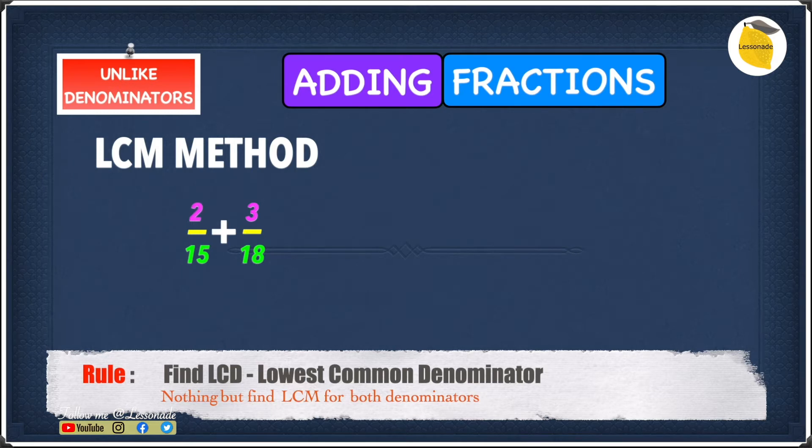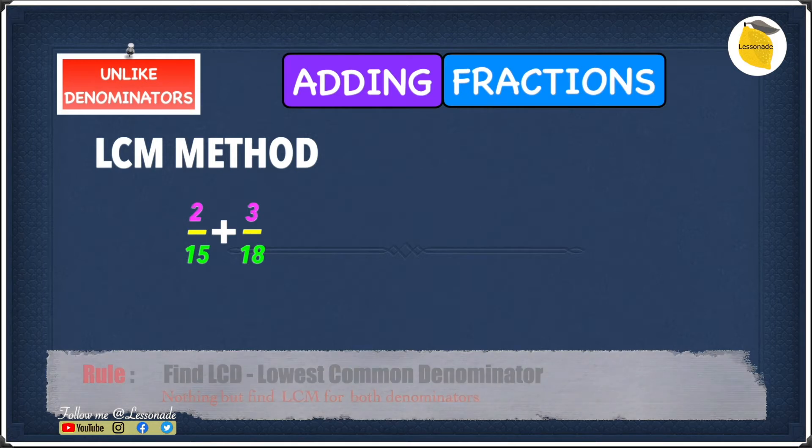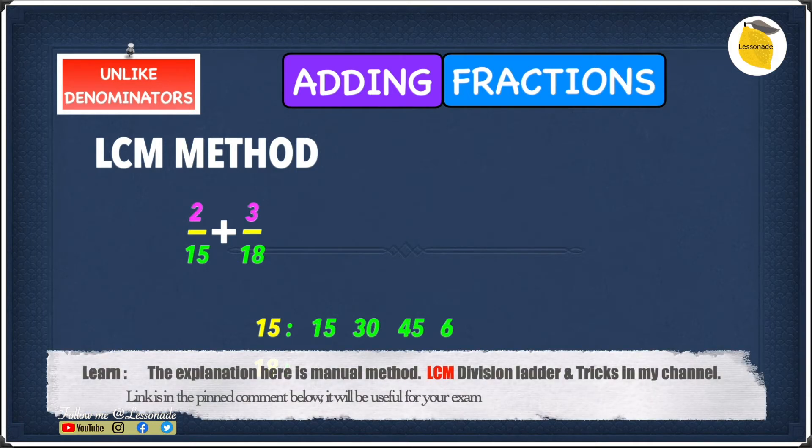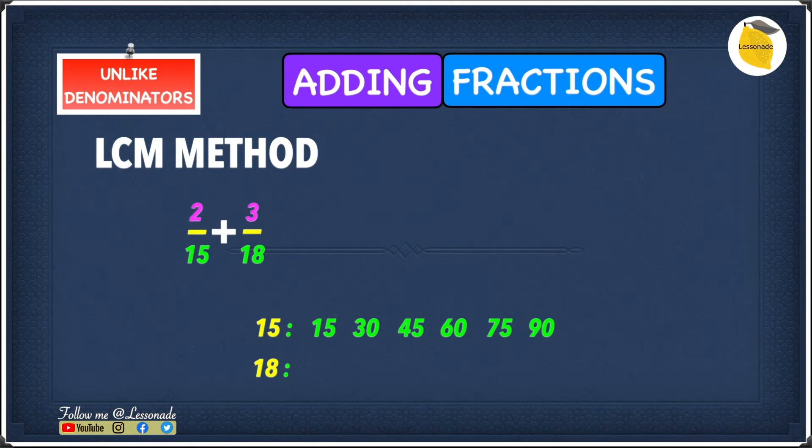First we're going to find the multiples for both 15 and 18. The multiples for 15 are 15, 30, 45, 60, 75, and 90. The multiples for 18 are 18, 36, 54, 72, 90, and 108.